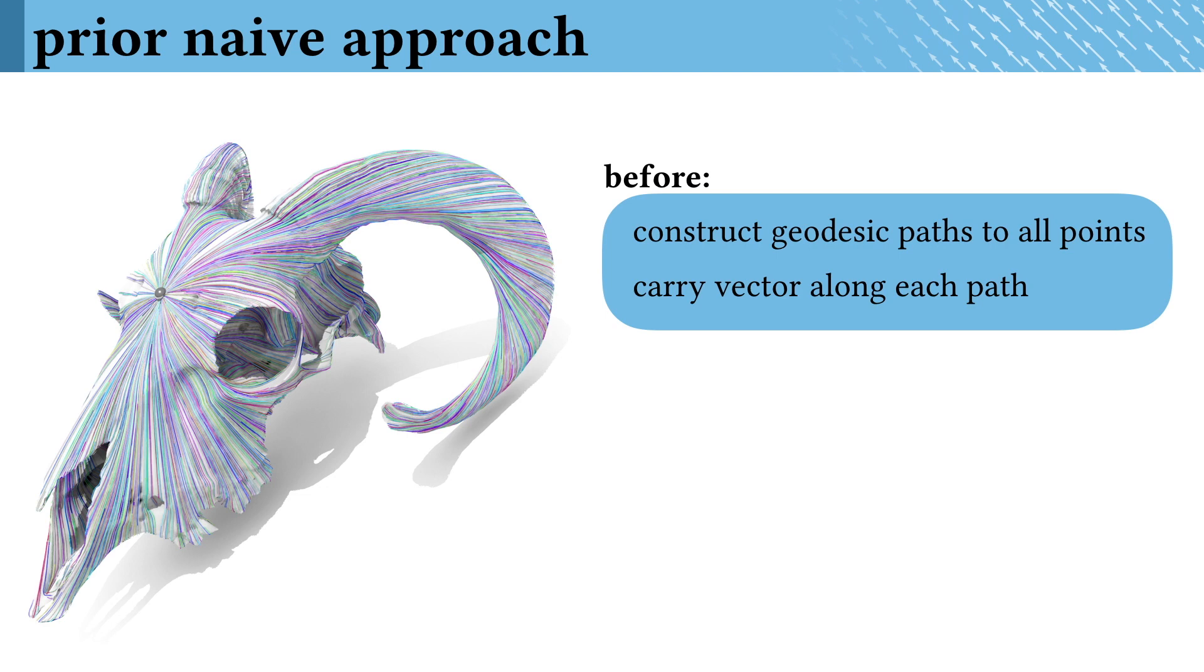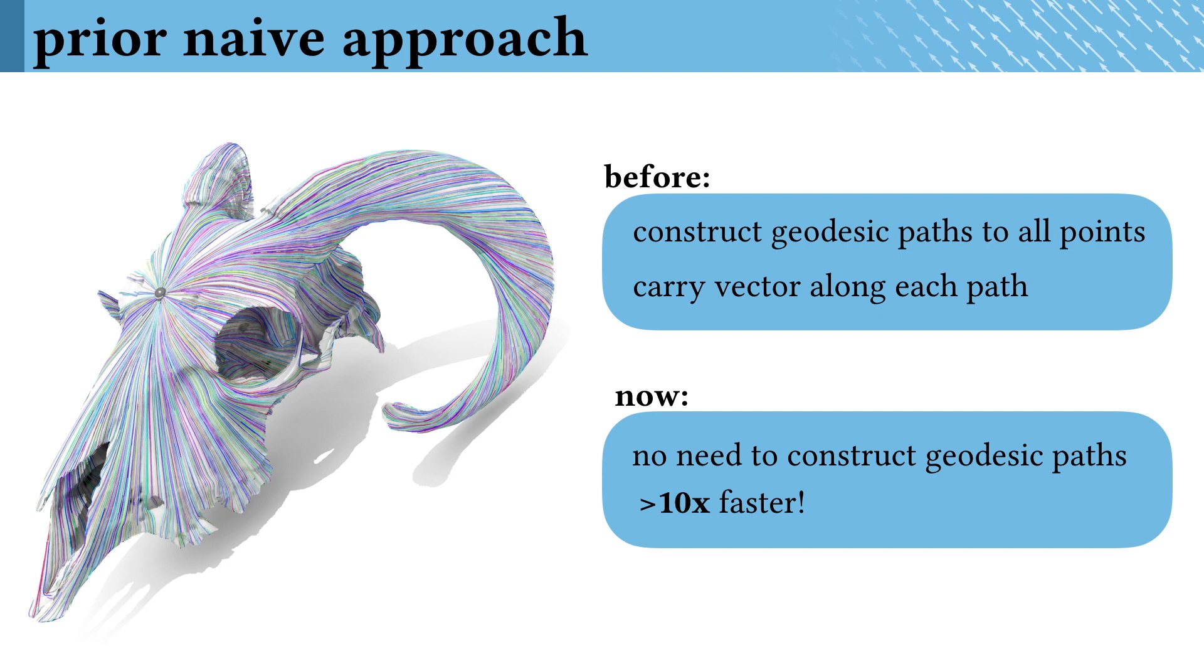The amazing thing about the Vector Heat Method is that we can compute the same quantity without actually constructing any geodesic paths. As a result, it's an order of magnitude or more faster and much simpler too.